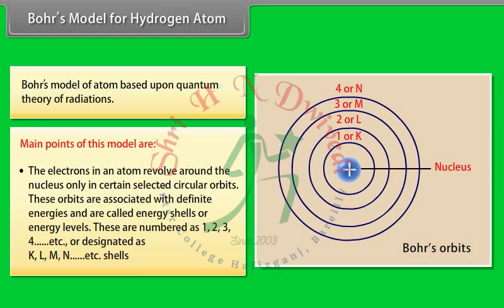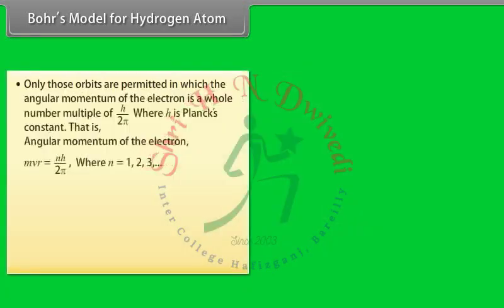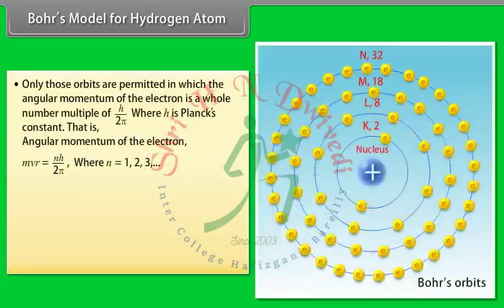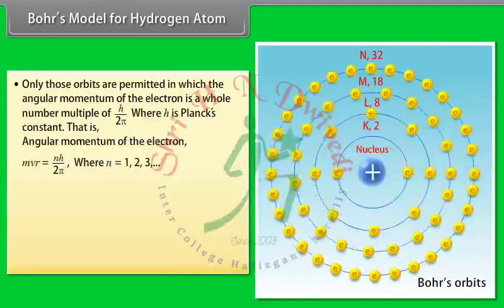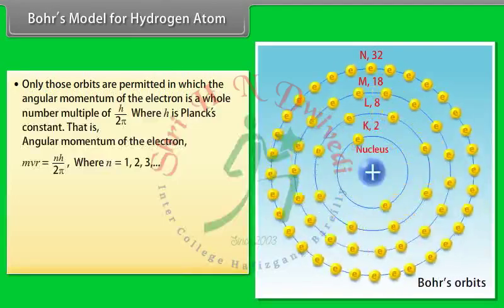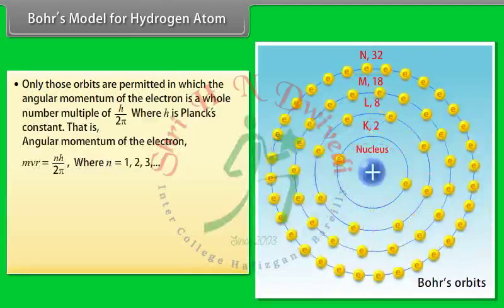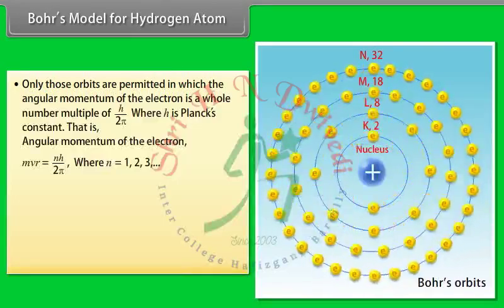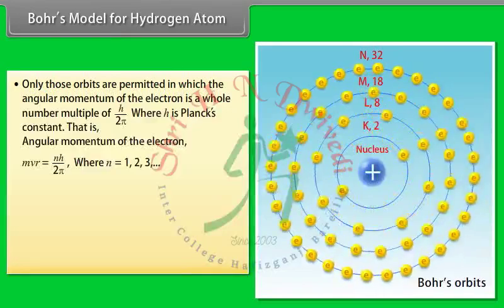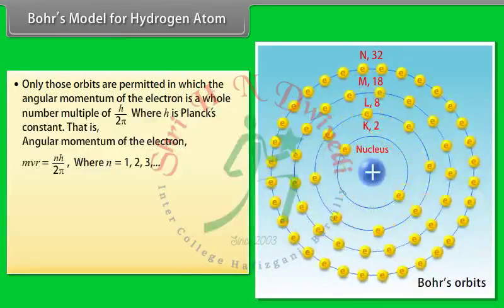These energy levels are numbered 1, 2, 3, 4, etc., or designated as K, L, M, N, etc. Only those orbits are permitted in which the angular momentum of the electron is a whole number multiple of h/2π, where h is Planck's constant.